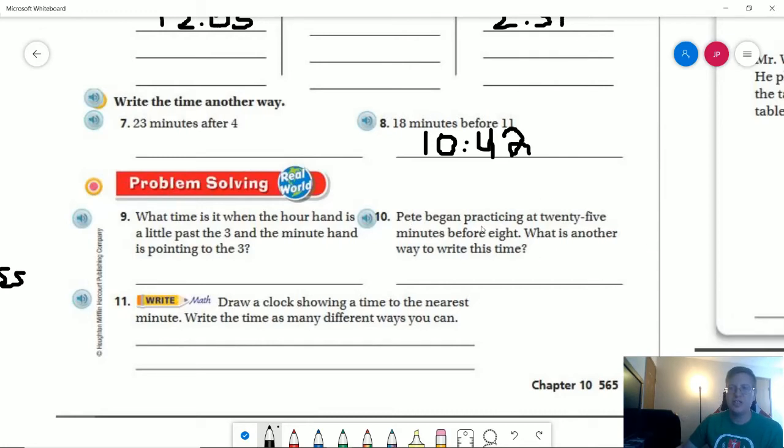Number 10, we are going to be working in our next couple lessons with elapsed time. So a problem that works with elapsed time, we want to figure out what time they started, what time they finished, and how long they did something.